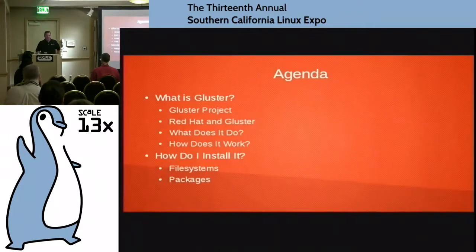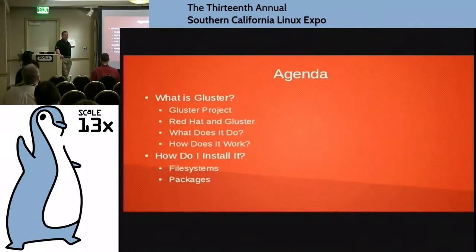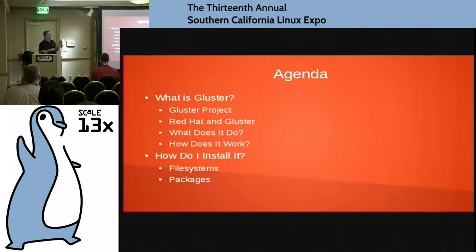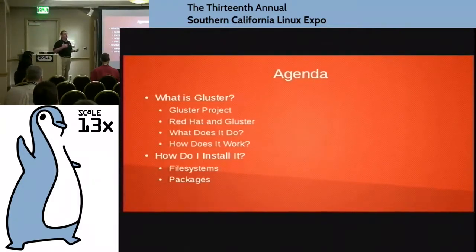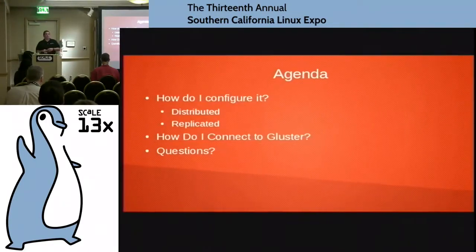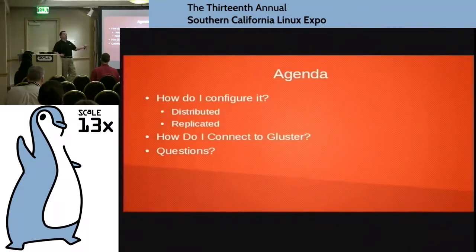What we're going to be talking about today is Gluster. I'll talk a little bit about the project, the upstream Gluster project, Red Hat and the Gluster project. We'll talk about what Gluster does, how it works, a little bit about the architecture behind it. Then I'll talk about how to install it — how you prepare your file systems, install the packages, get into configuration, set up distributed file sharing, replicated file sharing, and how you connect clients to your Gluster service. Then we'll open it up for questions.